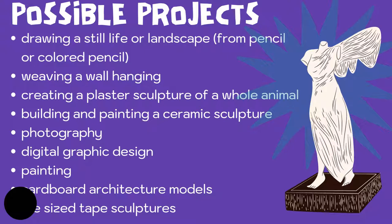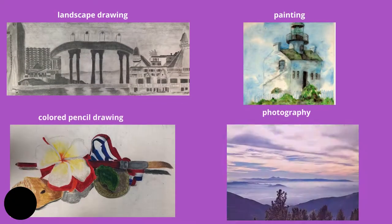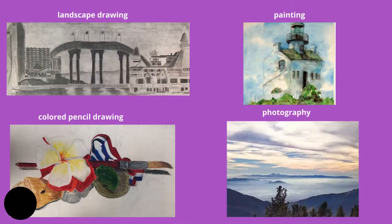So as you can see, some things are similar and some are a little bit different, but nothing would be identical to what you did in Art 1 as a 7th grader. Here are some visual examples of things that advanced art students have done in the past.